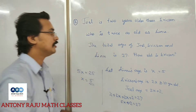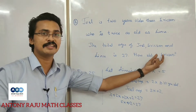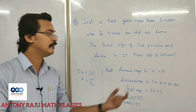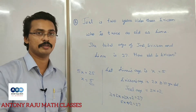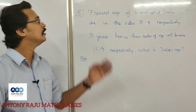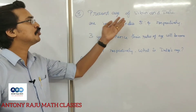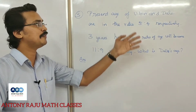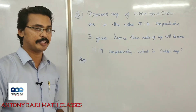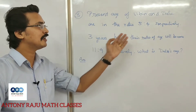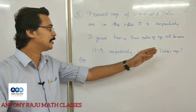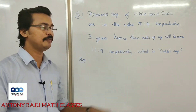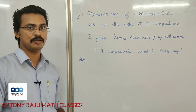So Erickson's age is 2x, which is 2 into 5 equals 10 years old. Now the third question: the present ages of Vipin and Dale are in the ratio 5 is to 4 respectively. 3 years hence the ratio of their ages will become 11 is to 9. What is Dale's present age?